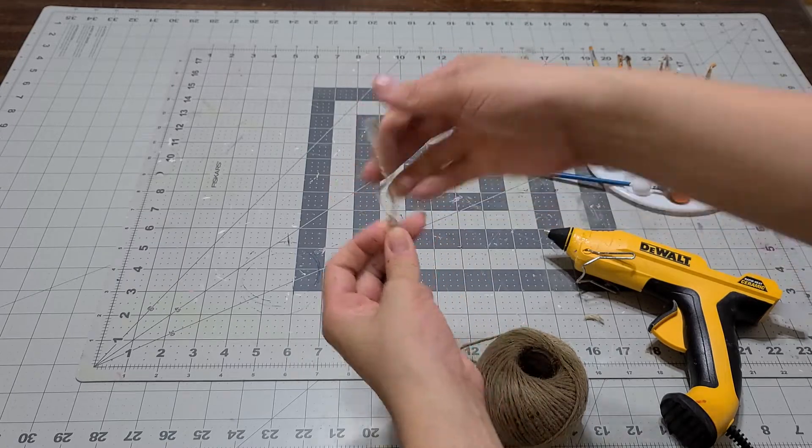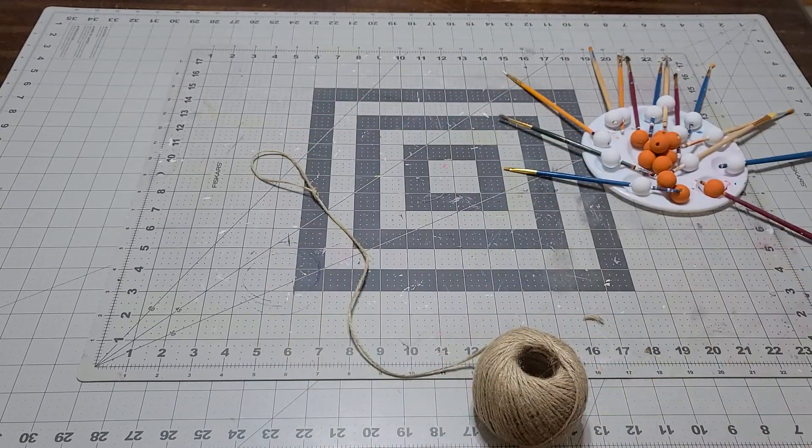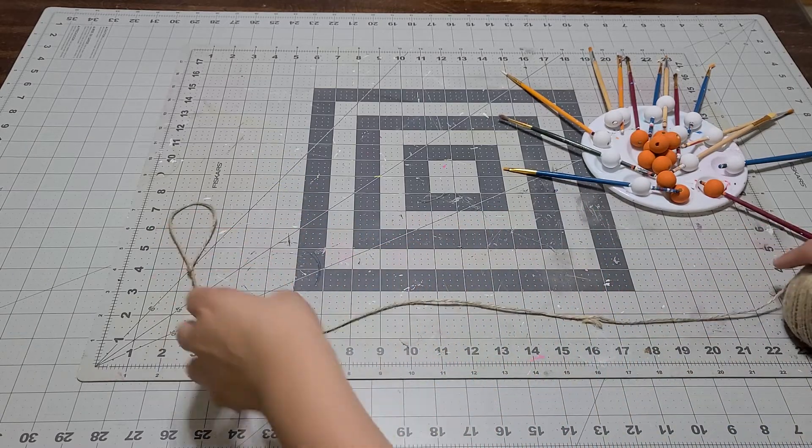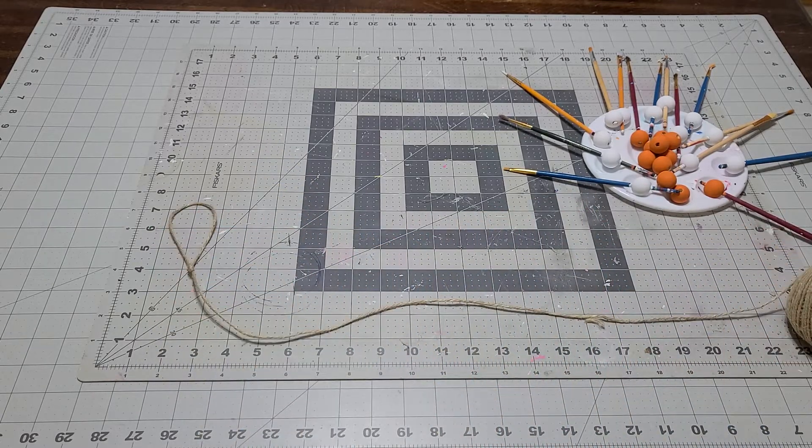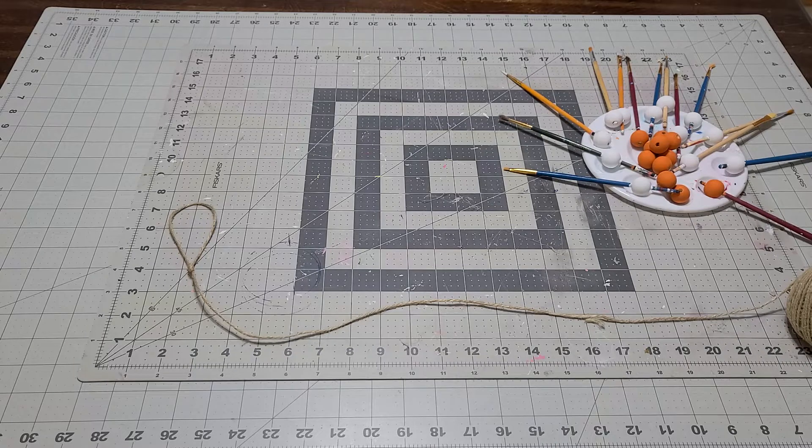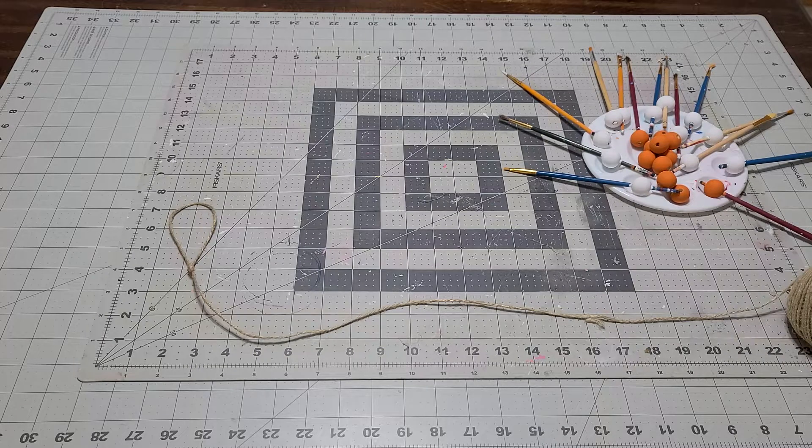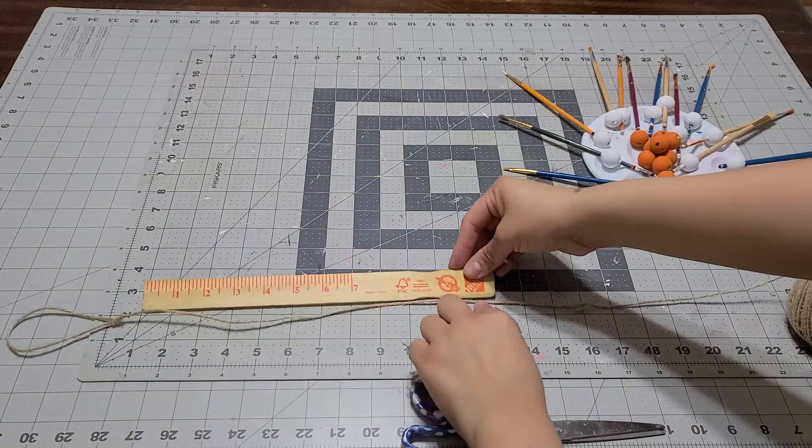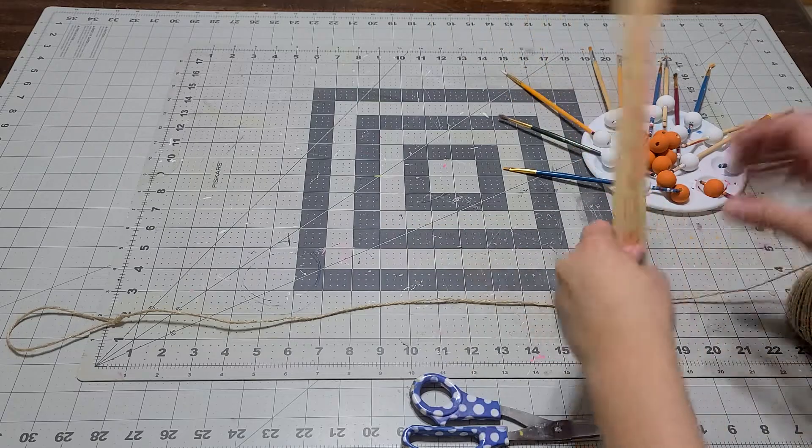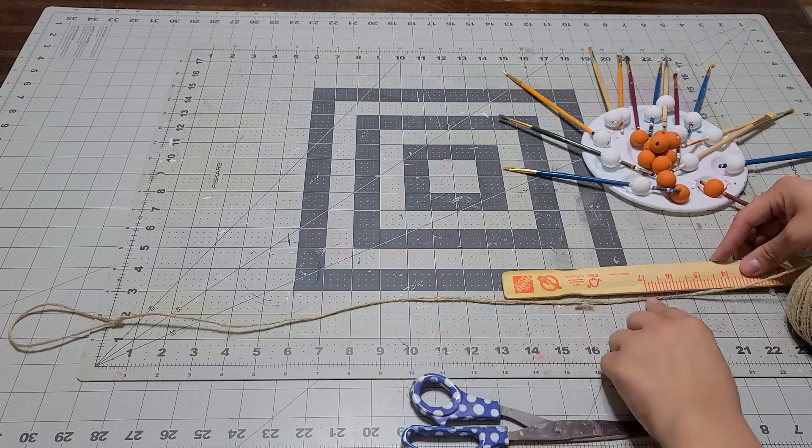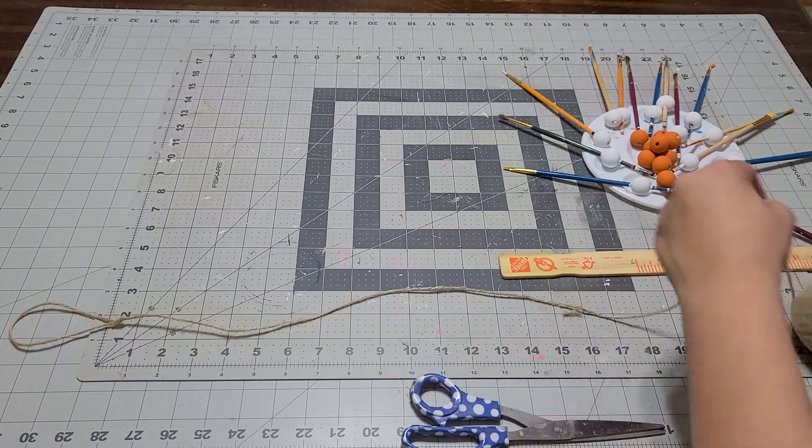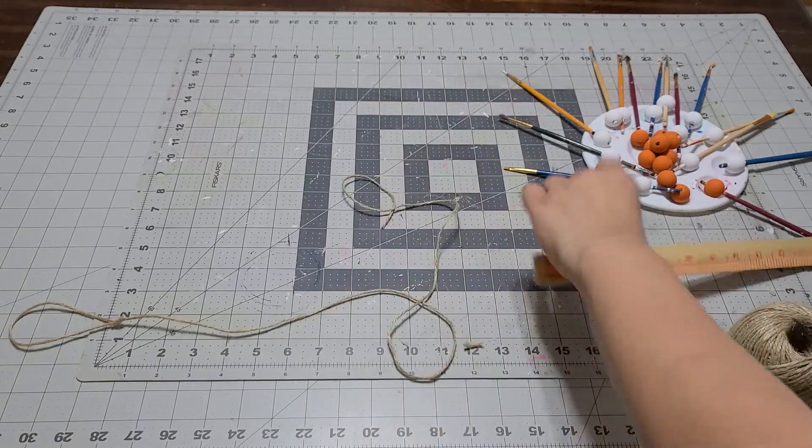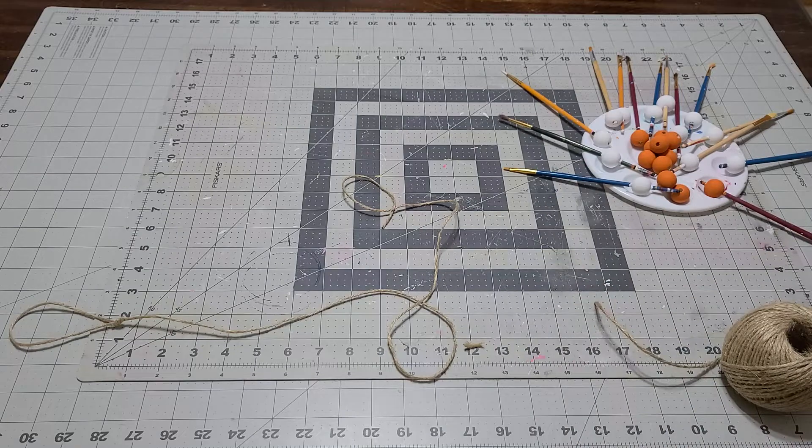Once it's nice and dry, make a knot. You don't have to, but I suggest it so it doesn't move. I'm going to measure this with a ruler, take it to about two, and do a little more because I want to make the knot as well.